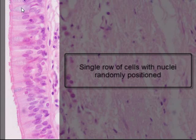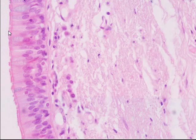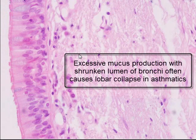Excess mucus production, such as in asthma, or damage to cilia due to cigarette smoking, can cause mucus plugging — a common cause of collapse of lobes of the lungs in young asthmatic people. We have seen examples of lobar collapse on chest x-rays and have seen several examples of this.